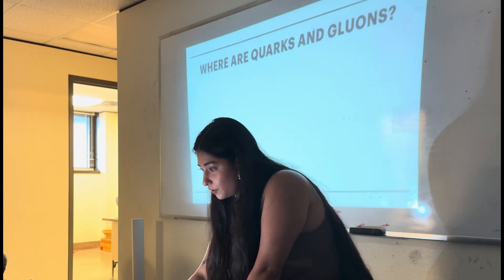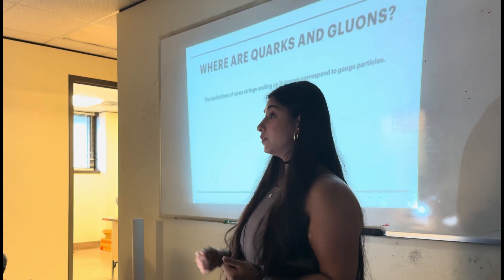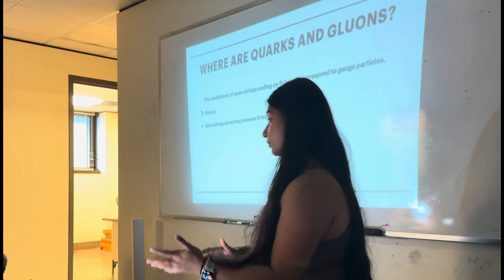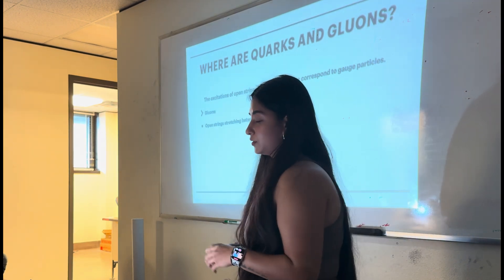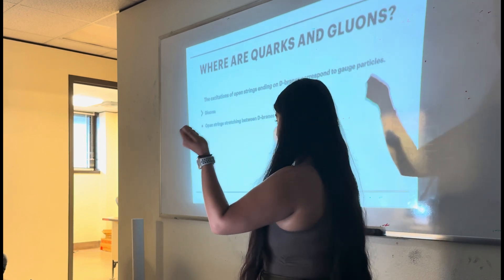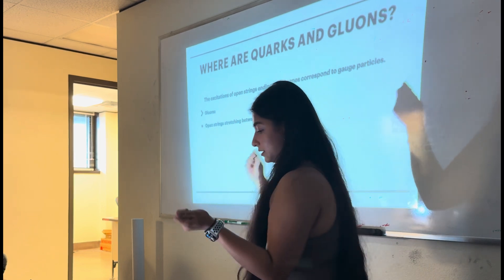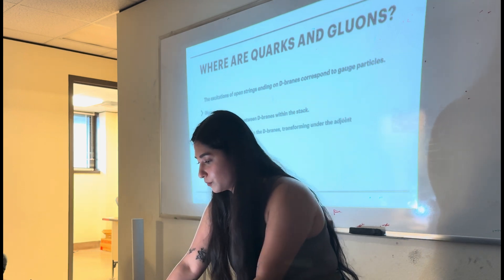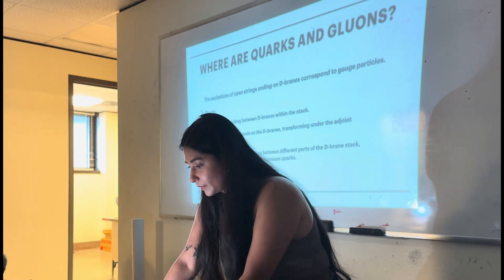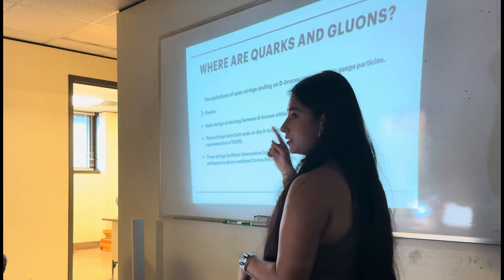Now, what happens in terms of the dual theory? The excitations of open strings, like we described, which end on D-branes, correspond to gauge particles. So, in terms of gluons, gluons first because it's easier to understand. So, open strings, we have strings with two ends open. If both the ends are on D-branes, on the stack of D-branes, it does not matter which D-brane, if both the ends are amongst the stack, they are described by gluons, and these strings have, like I said, they transform under the adjoint representation. And similar to what we see in QCD, these strings facilitate interactions between different parts of D-branes.